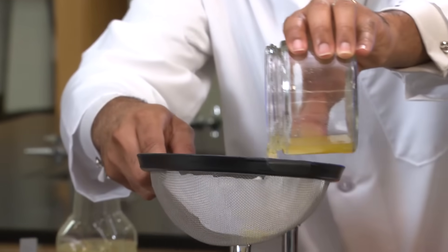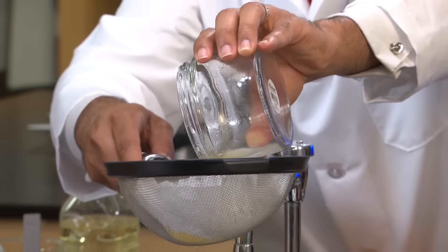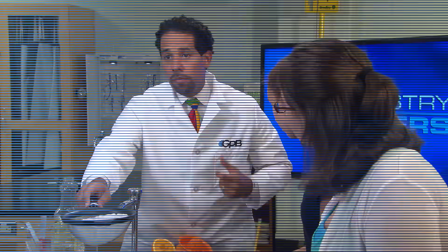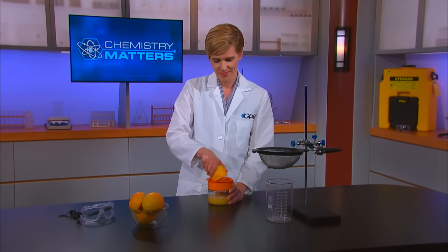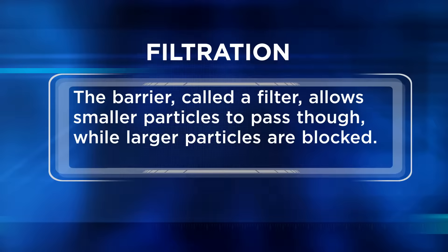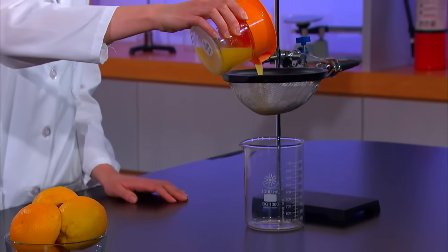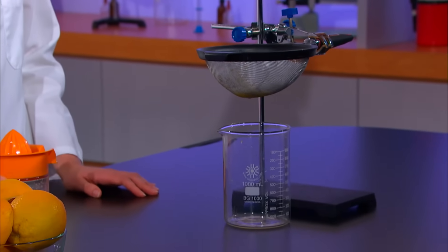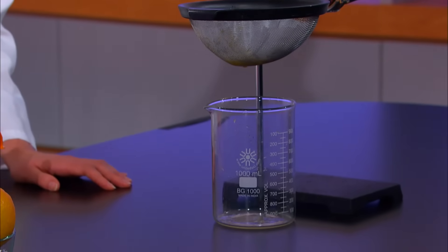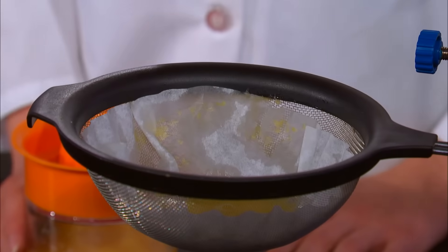We can even use filter paper to separate the pulp. The strainer and the filter paper both have small holes that let the liquid drip through, but the filter paper has holes that are microscopically small. We call this process filtration. Filtration is a physical process used to separate solids from liquids by passing them through a barrier. The barrier, called a filter, allows small particles to pass through while larger particles are blocked. Filtration is used to separate heterogeneous mixtures, and a porous barrier is used to separate a solid from a liquid. Our porous barrier is the strainer and this filter paper. Special filters can even separate gases.